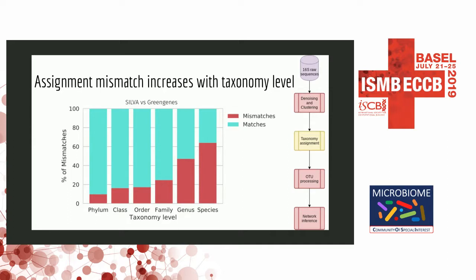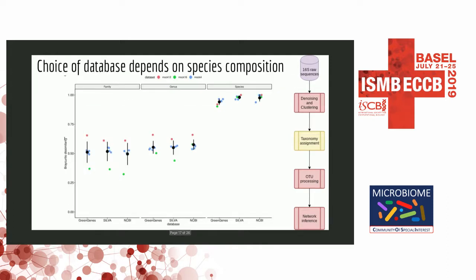When comparing Silva and GreenGenes, as you look at higher taxonomic orders you get a decrease in matches. The choice of database actually depends on the kind of dataset you have — based on the species composition in your mock community, some databases perform much better because certain mock communities have certain species which get assigned really well in those databases.